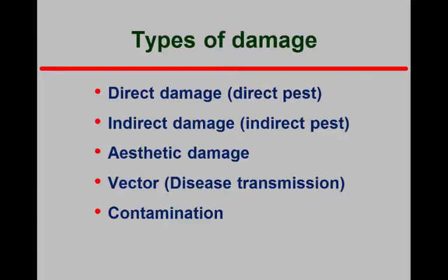Some other things when it comes to pest management are the types of damage pests cause. Direct damage would be like the codling moth — it gets into the apple, which is what I want to harvest, and it destroys the apple. On the other hand, spider mites feeding on the apple tree damage the leaves, so the apples produced are usually smaller than they should be — that would be an indirect effect. Do you see the difference between direct and indirect?